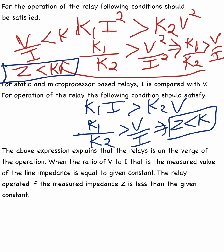In summary, the impedance relay measures the impedance of the line at the relay location. When a fault occurs on the protected line section, the measured impedance is the impedance of the line section between the relay location and the point of fault. This is a key answer for impedance relay questions in interviews.